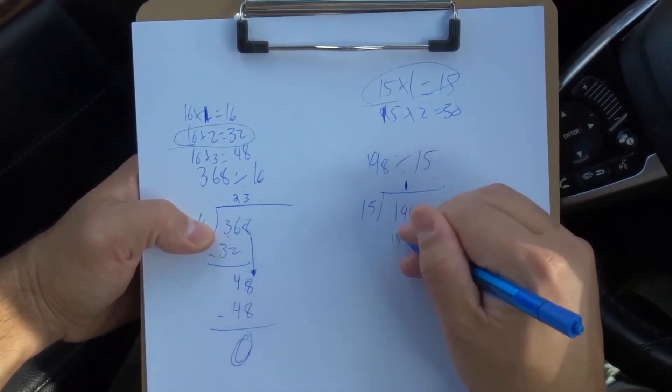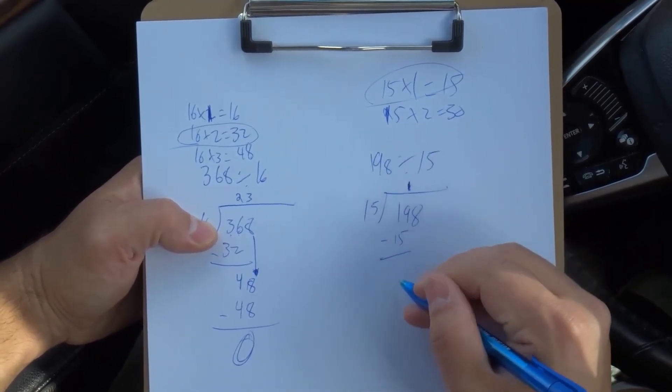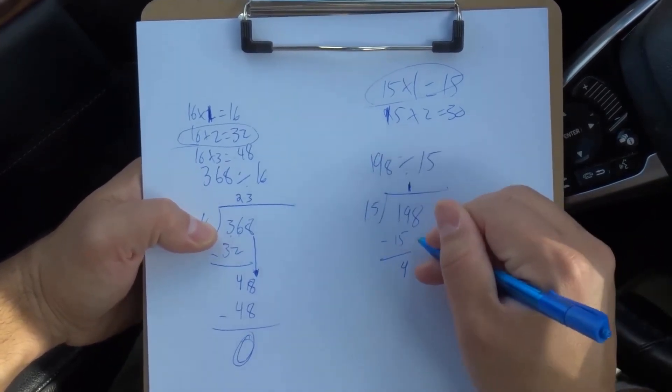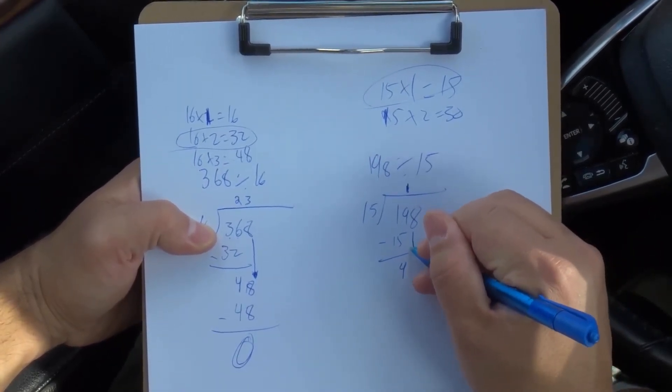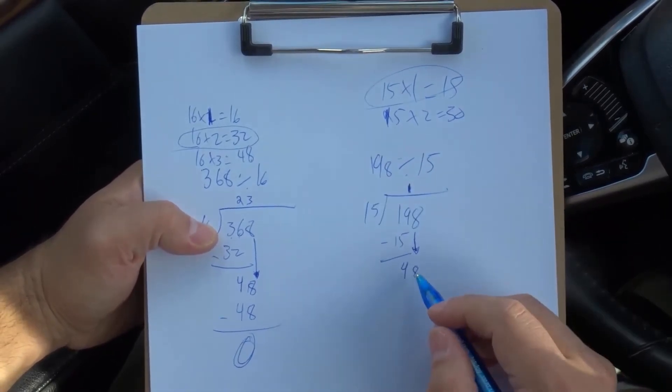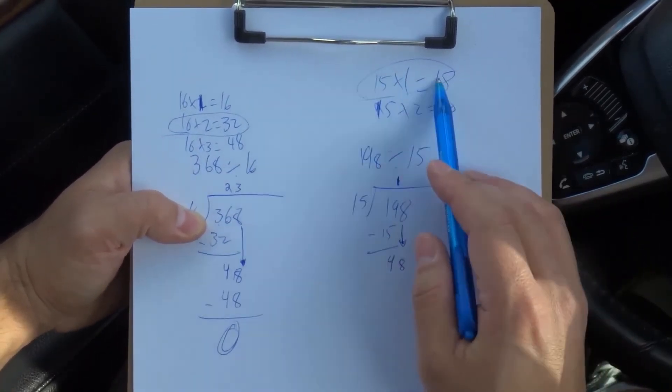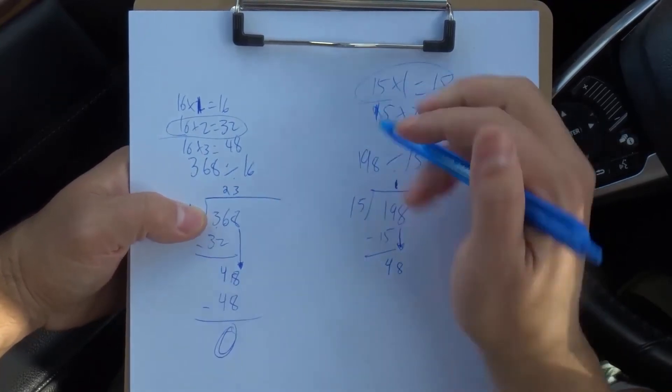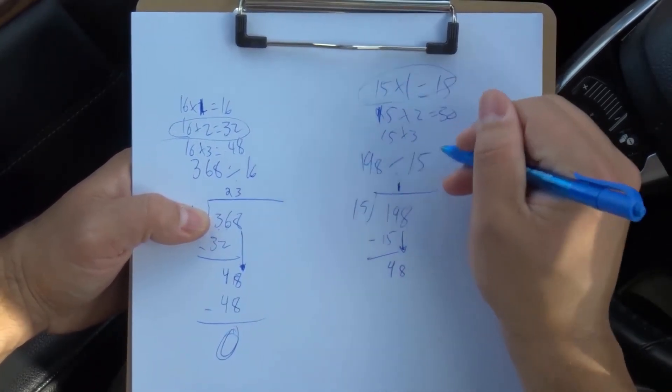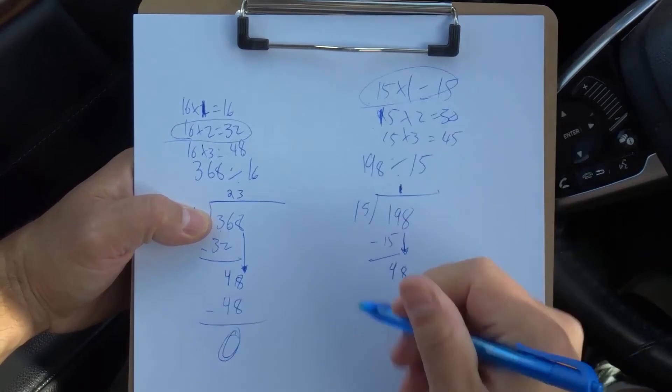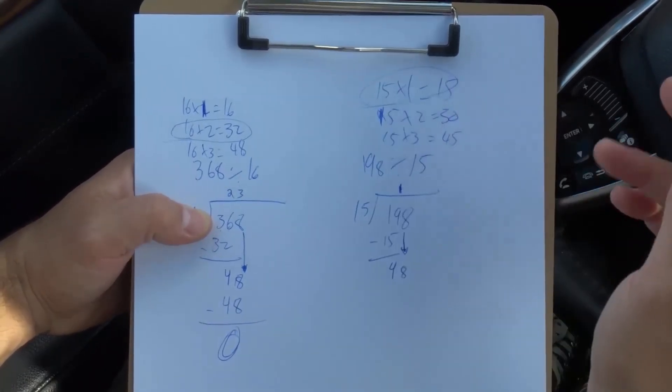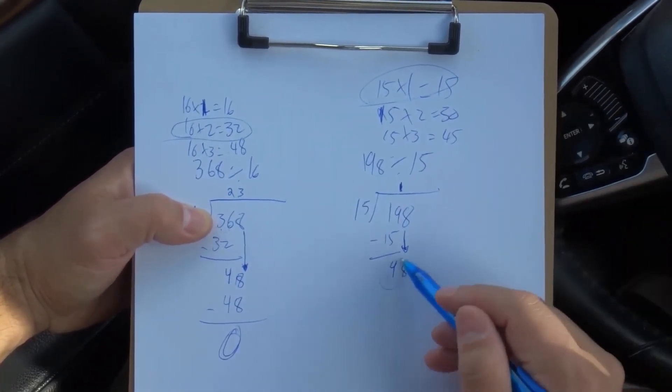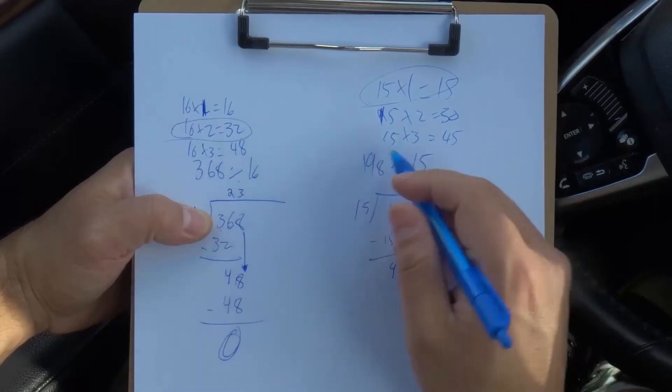15 times 1 is 15. Subtract. 19 minus 15 is 4. Bring down the 8. The 8 goes beside the 4. We have 48 now. So once again, 15 times 1 is 15. 15 times 2 is 30. 15 times 3 is going to be 45. 15 times 4 is 60. 60 is too much, but 45 is just enough that it's right below 48.